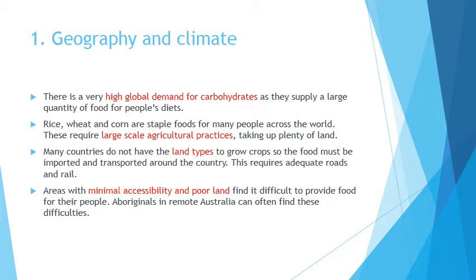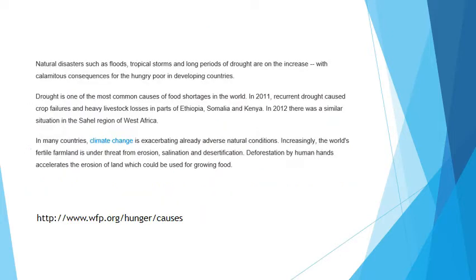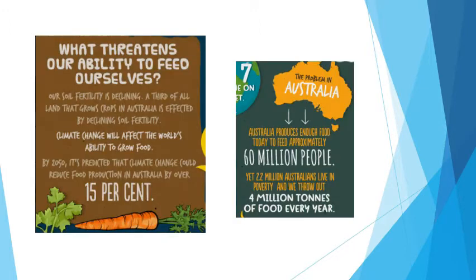In Australia, a lot of those people are Aboriginal people who can find difficulty accessing food. I've taken a clip from the World Food Programme website about how natural disasters and climate change are affecting food around the world — pause and make some notes. The picture tells us that Australia produces enough food to feed 60 million people, yet we only have 27 million people here. However, 2.2 million Australians are actually in poverty and not getting enough food, while we're throwing away 4 million tons of food every year — a huge problem with waste.